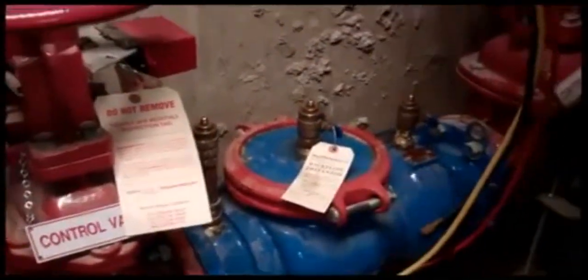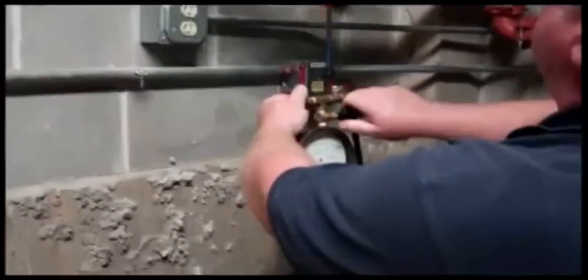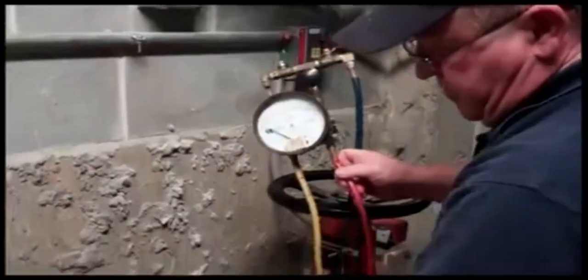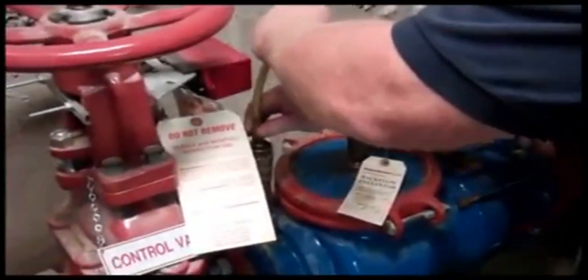A device that's used to test the backflow prevention device is commonly referred to as a backflow test kit. This kit consists of a pressure differential gauge, several valves, and some tubing that allows it to be connected to the device.